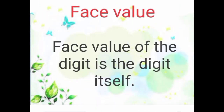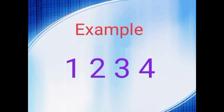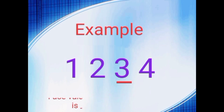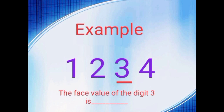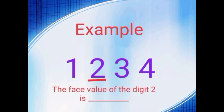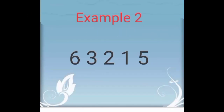The face value of a digit is the digit itself — it never changes. For example, the face value of digit 4 is 4. The face value of digit 3 is 3. The face value of digit 2 is 2. Are you clear? Okay.